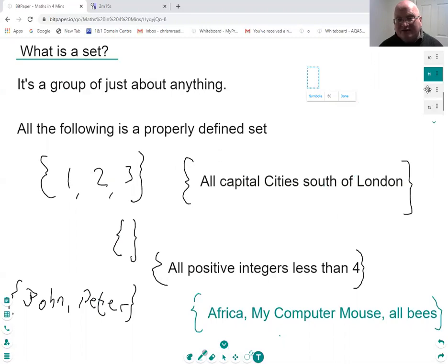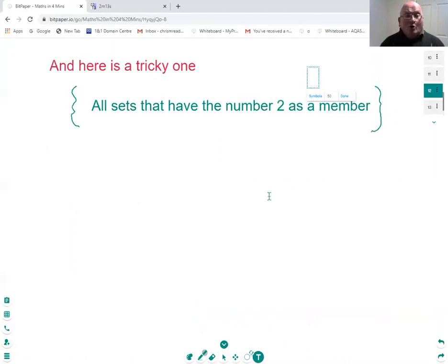One that's a little bit tricky to understand, maybe. All sets that have the number two as a member. So, everything in this set is a set. Number two isn't in this set, but a set with the number two in is a member. Maybe that's a little bit more complicated to describe.